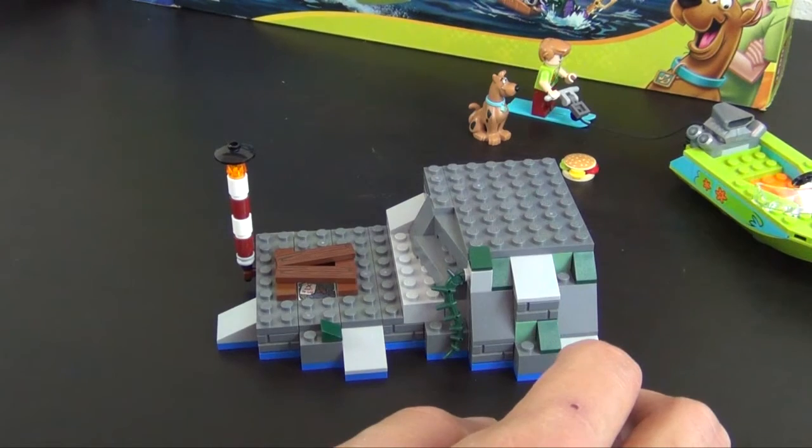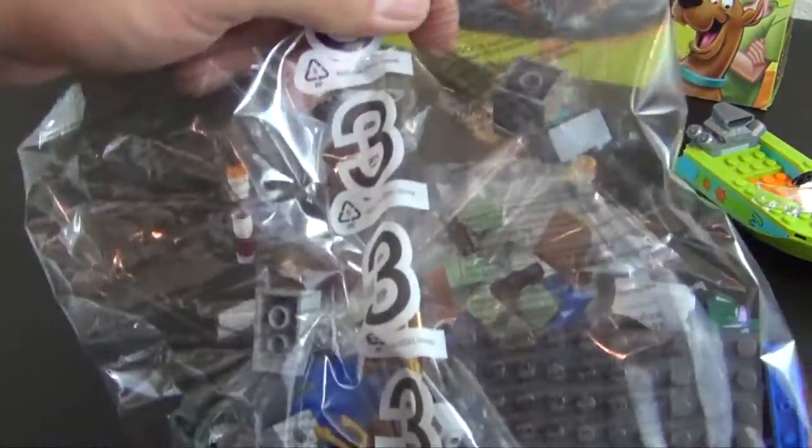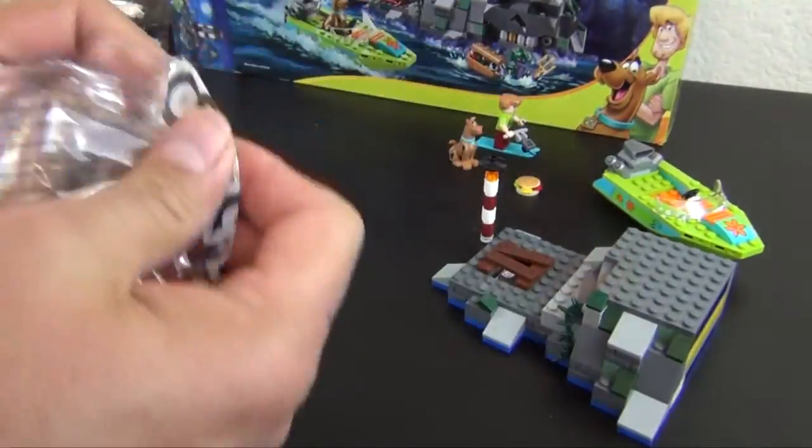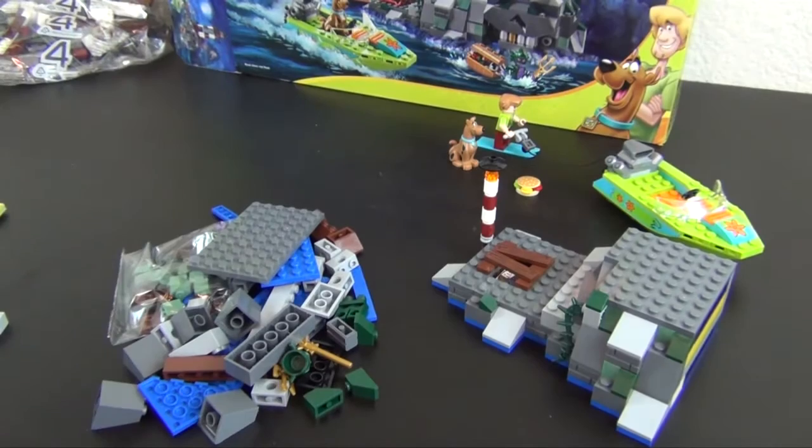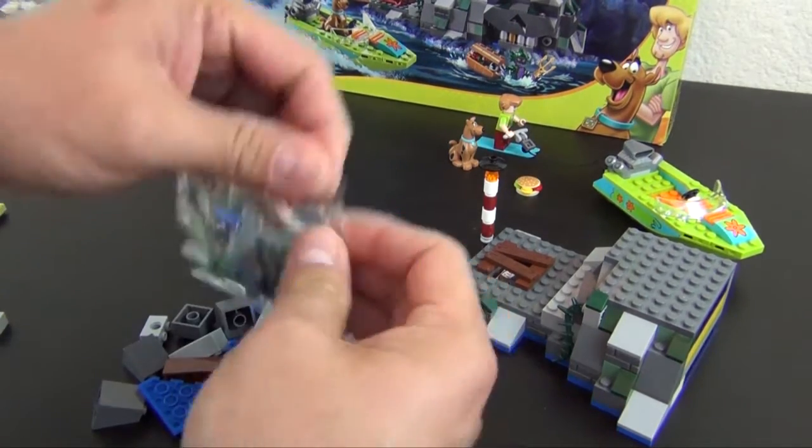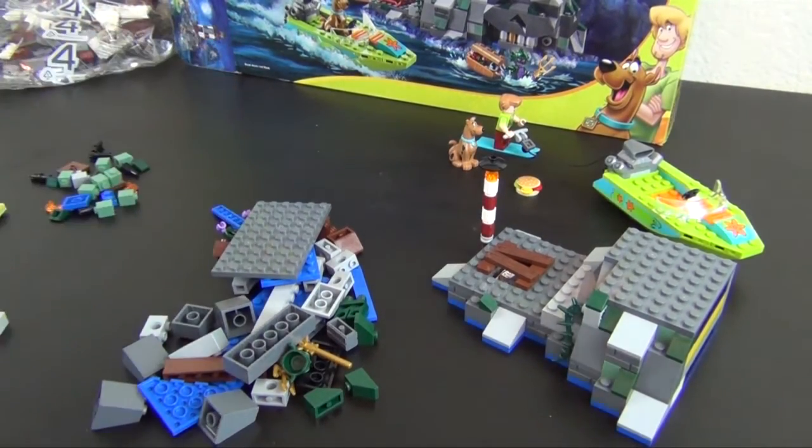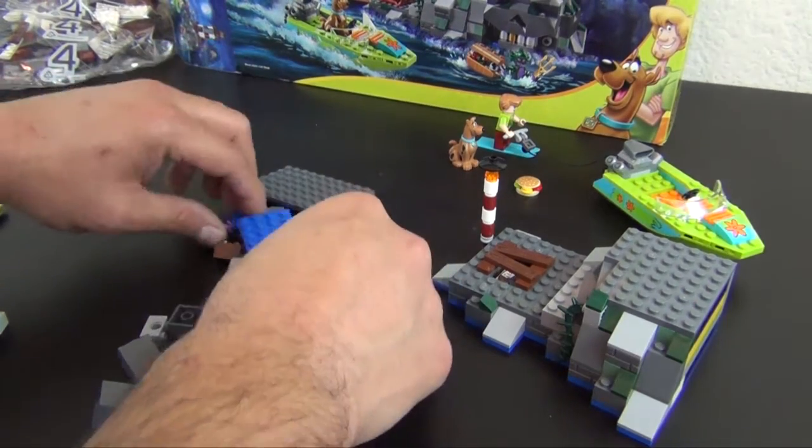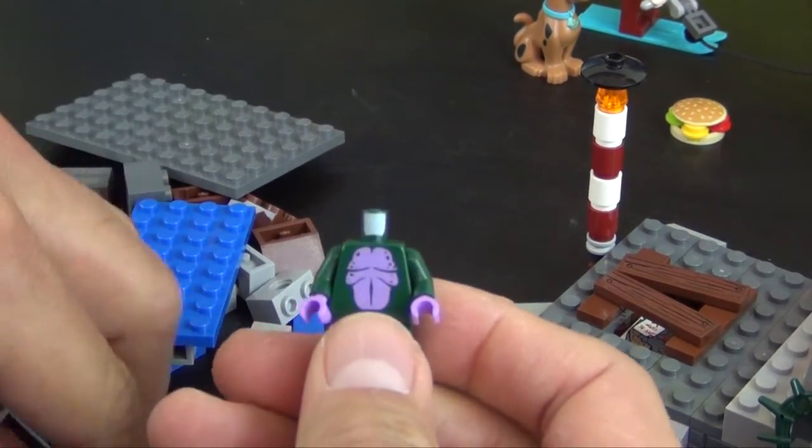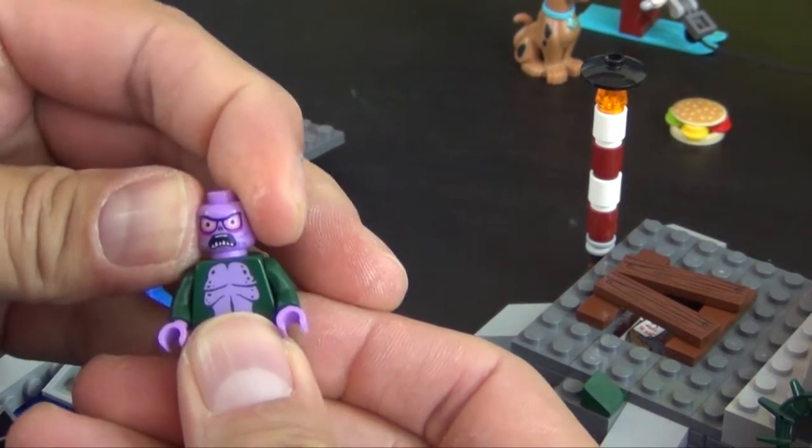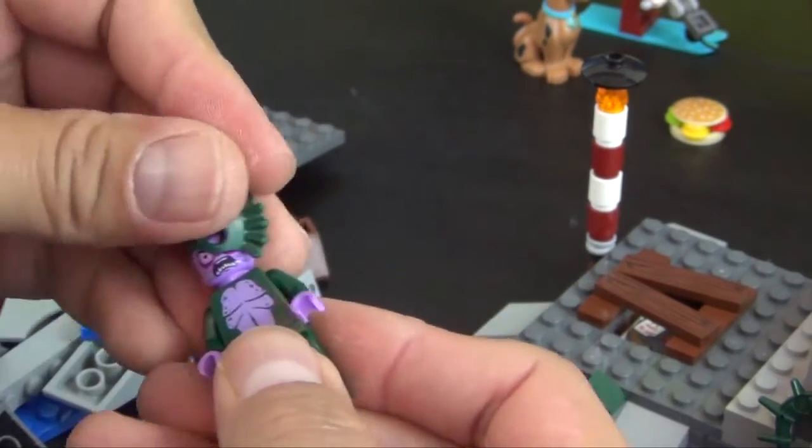As you can see we are getting started with our lighthouse area. So we are going to jump into bag number 3 now. Small bag of parts, not very many small parts in this set. Alright, so we are going to build the swamp creature minifigure. He has the double sided face, he has the scary face and then on the other side it is the revealed face of who the actual creature is.